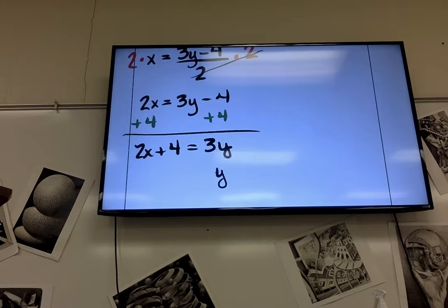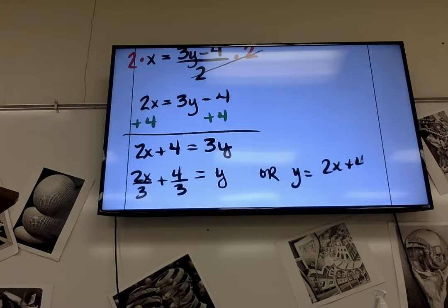So you get y equals, and you can divide each one of them by 3, or you can make it 2x plus 4, the whole thing over 3. It doesn't matter. It's the same thing either way. So, which way do you like it better? Left or right? The right? Okay. Let's do that one.